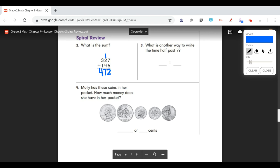The next one, what is another way to write the time half past 7? If it's half past an hour, that means it's still that hour. So we know it's going to be 7 something. And if we're half past, that means we're half an hour past. And a half an hour means it's 7:30.